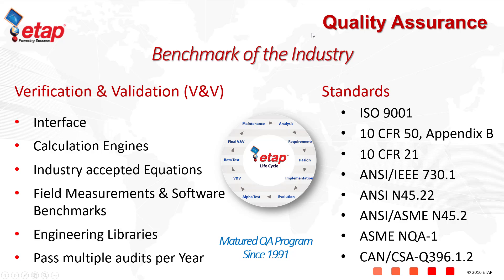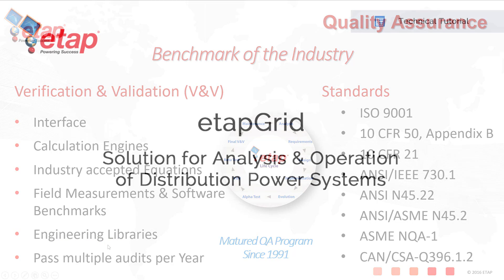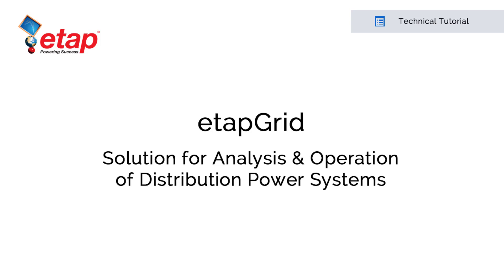ETAP Grid follows an established ETAP QA program. The ETAP QA program was established in 1991 and follows certain core standards that apply to the verification and validation of the software. That includes interface and calculation engines which use industry-accepted equations. Calculation engines have been tested against software benchmarks, hand calculations, as well as field measurements. It also includes verified and validated engineering libraries. If you have any questions or would like to get in touch with us, feel free to call or email us at sales@ETAP.com. Thank you.